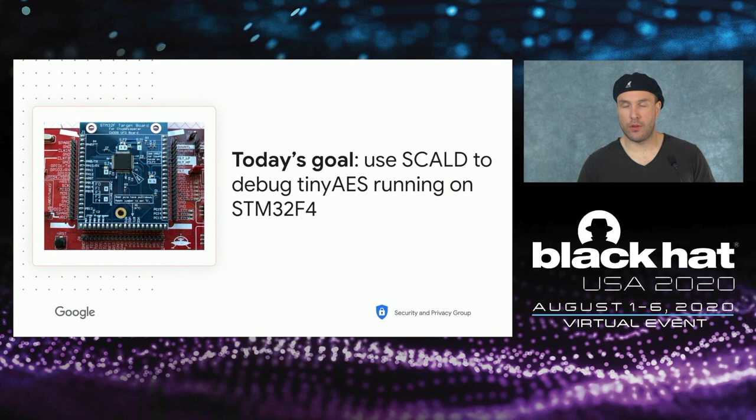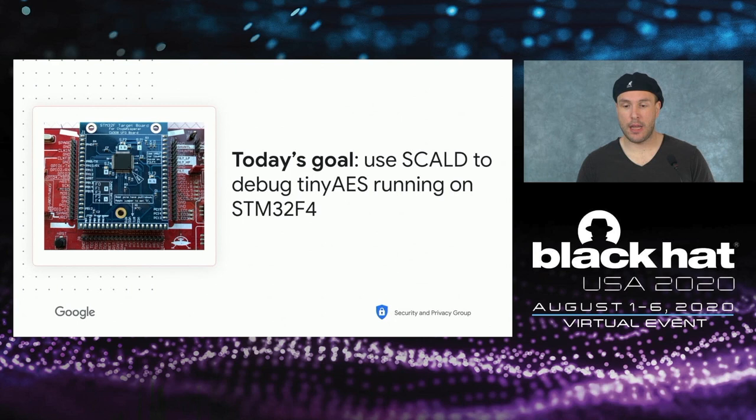To make it very concrete, I'm going to show you how we can use SCOLD to find where a TinyAES implementation running on an STM32 F4 is leaking. This is an unprotected TinyAES implementation running on a well-known ARM CPU. This combination of TinyAES and STM32 is what we call a target, because side-channel attacks are due to the interplay between the implementation and the hardware.